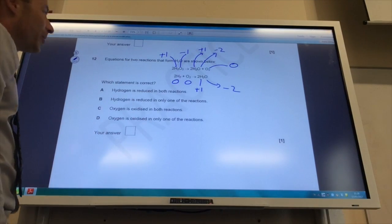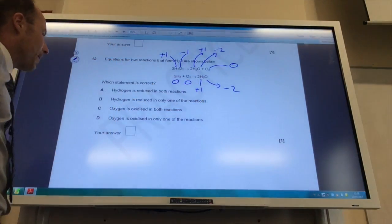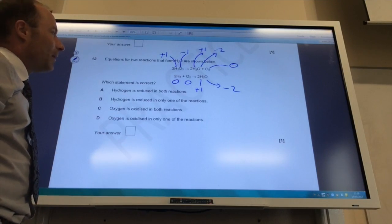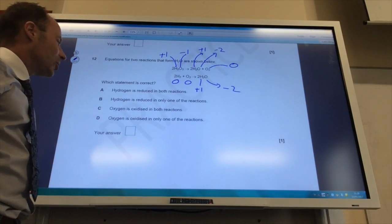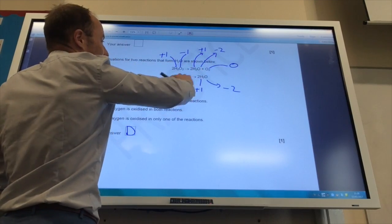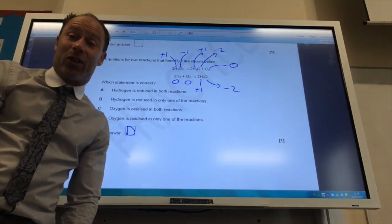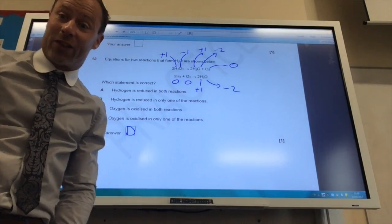Hydrogen is reduced in any one of the reactions. Not correct because hydrogen is oxidized in this reaction. Oxygen is oxidized in both reactions. Again not correct because oxygen is reduced in this reaction. Oxygen is oxidized in only one of the reactions. That's the correct one because it's oxidized in this reaction but not this one. So the answer to 12 is D, and this reaction is an example of a disproportionation reaction.